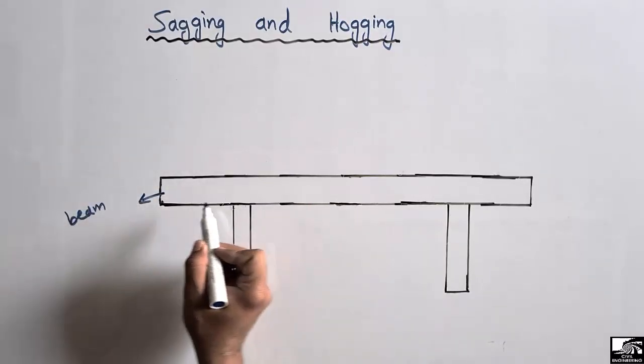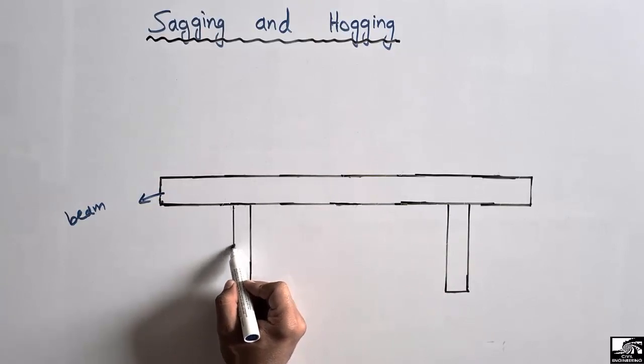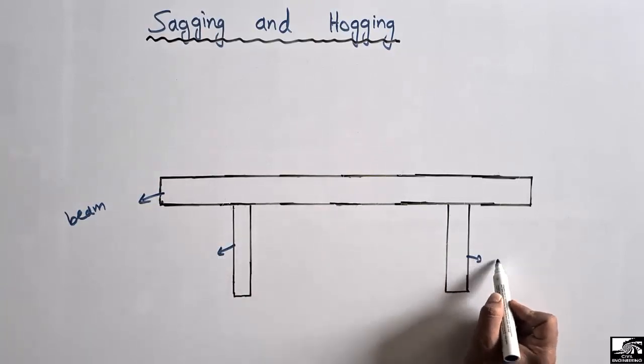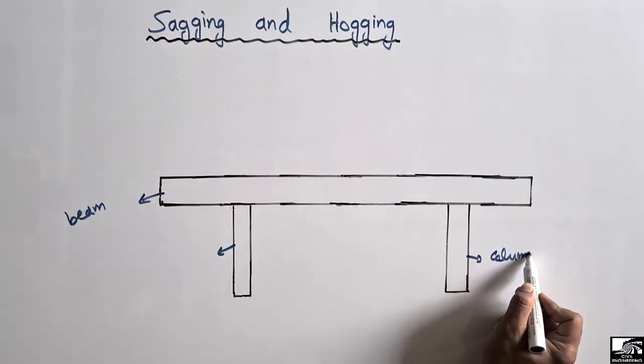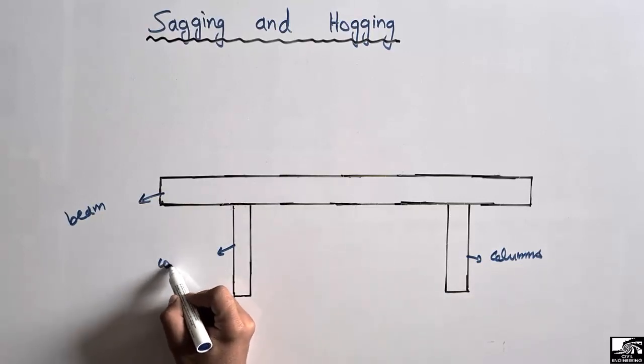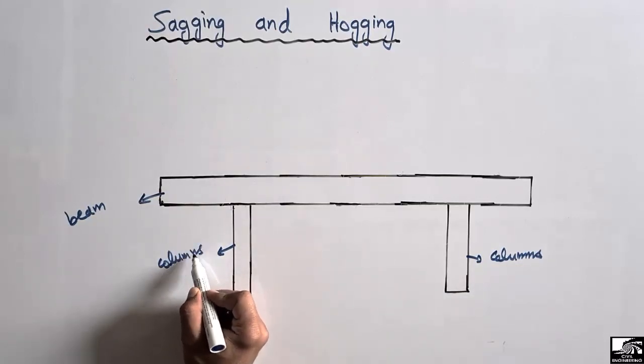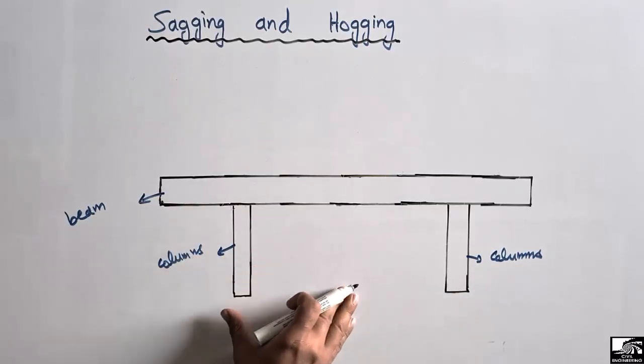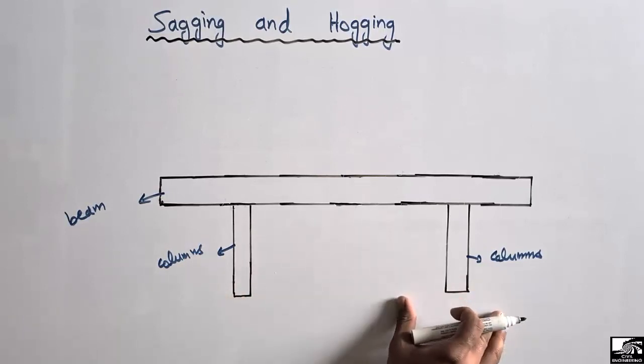When load acts on the beam, the beam will show some deflection and it will bend. These columns will support the load of the beam as well as the live load. Let's consider that there is a uniformly distributed load acting on this beam.